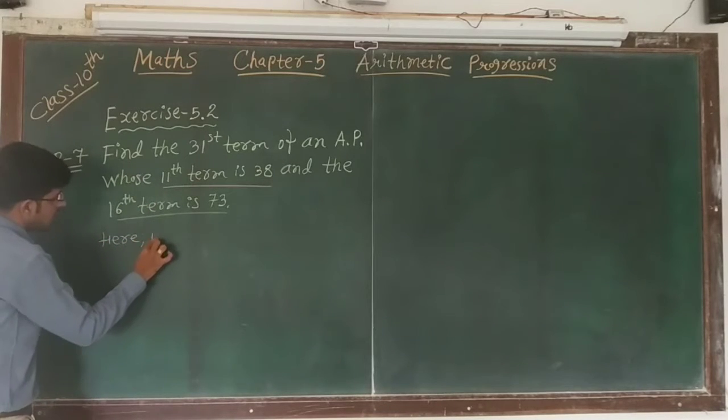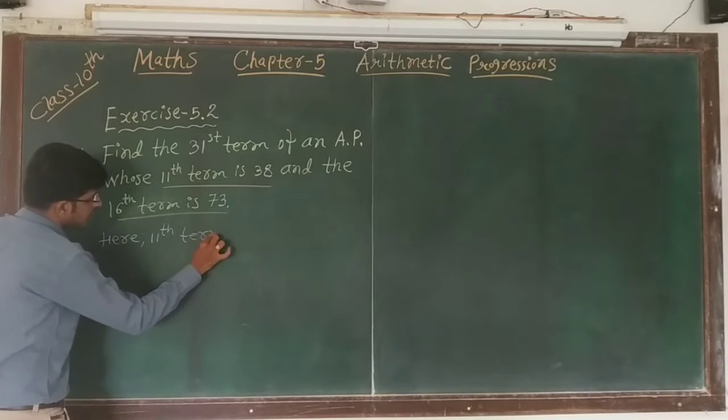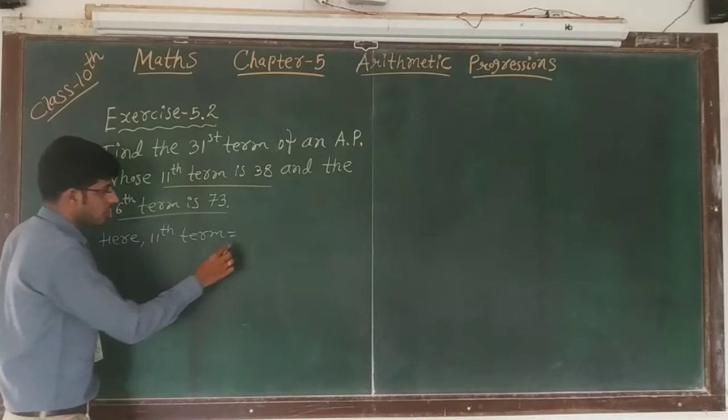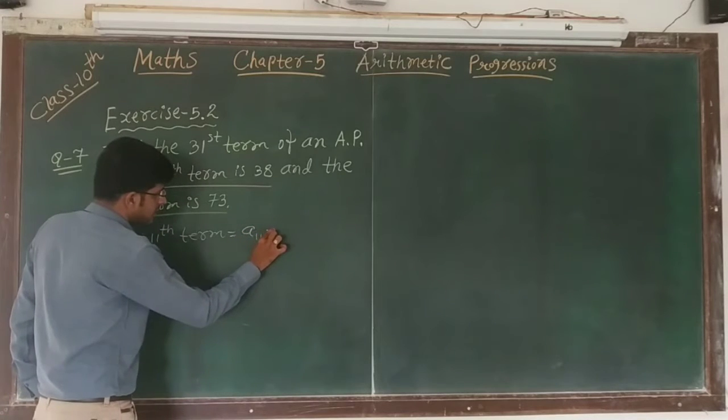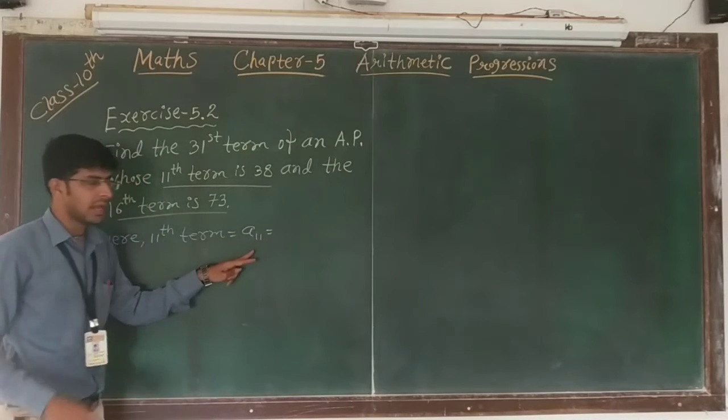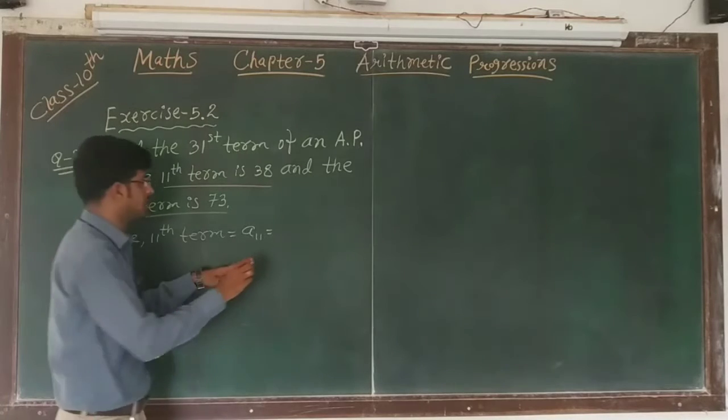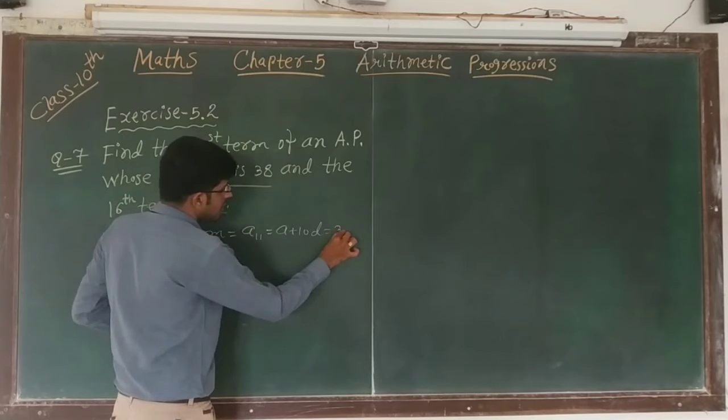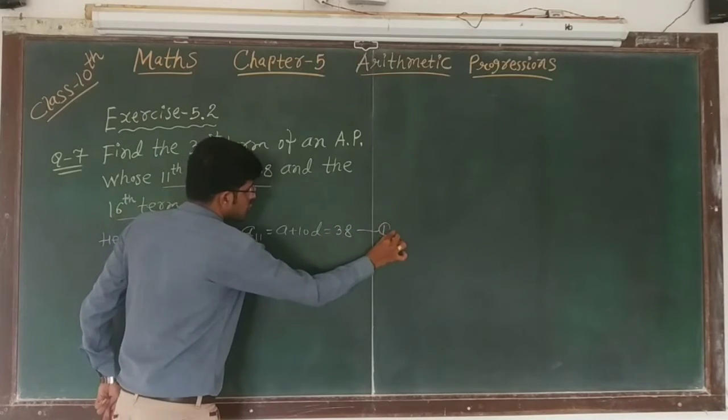Here, the 11th term is equal to, it is denoted by a11, so a11 is equal to a plus 10d, and it is equal to 38. This is called equation number 1.